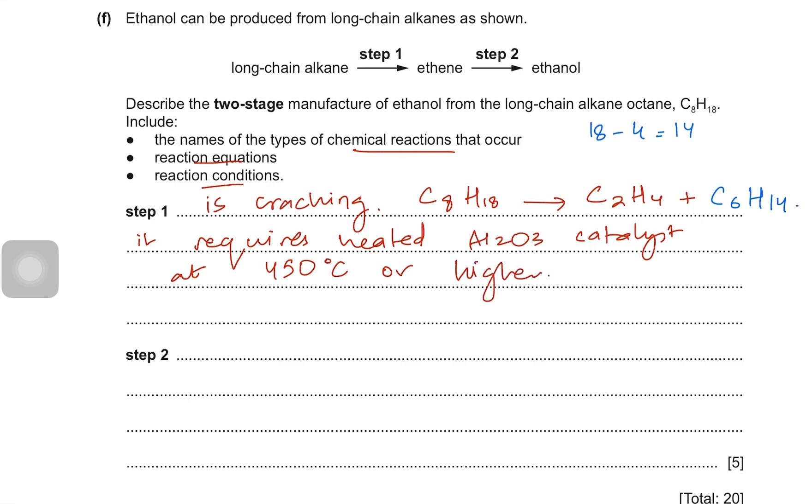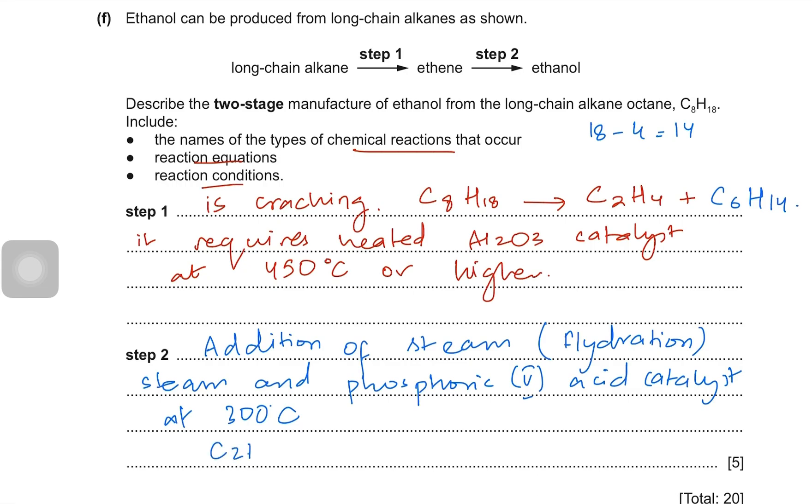What about step 2? In step 2, ethene is made into ethanol. So that is addition of steam. In a lot of books you will also find this reaction as hydration. What do you need for that? You need steam and phosphoric acid catalyst at 300 degrees Celsius. When ethene is taken and steam is added, you get C2H6O.